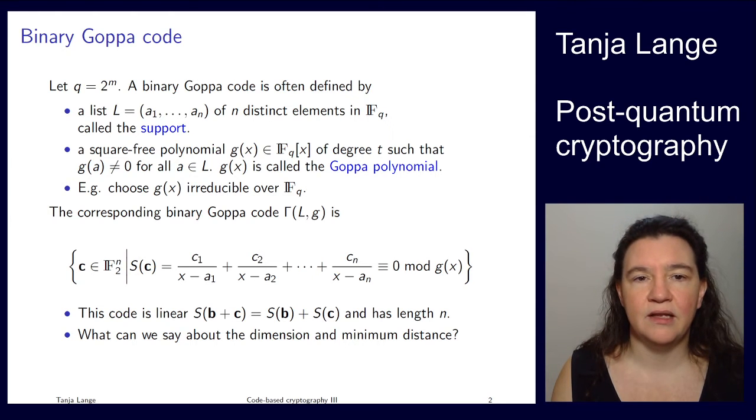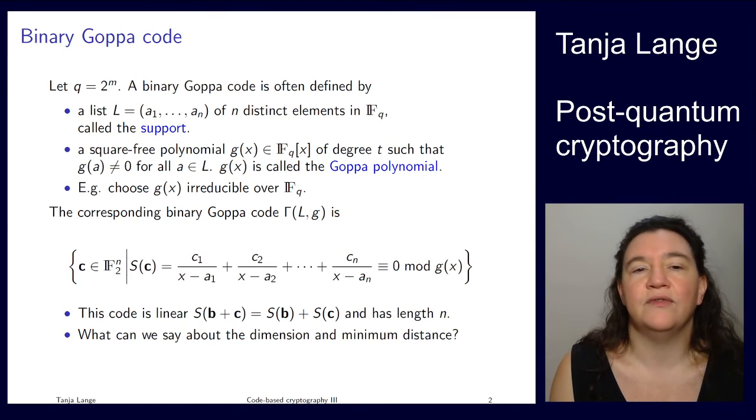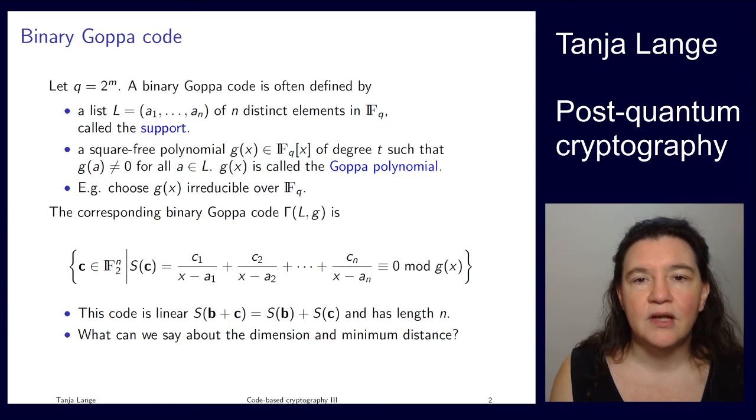And this polynomial is called the Goppa polynomial and it relates to the support that we have just seen. So this list of the ai, so a1 to an, we require that the ai's are not roots. So if g is irreducible over that field, well first of all it definitely doesn't have any roots. And so that's why the irreducible choice is very convenient there.